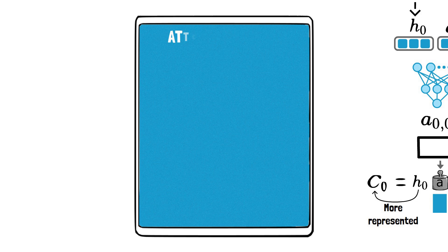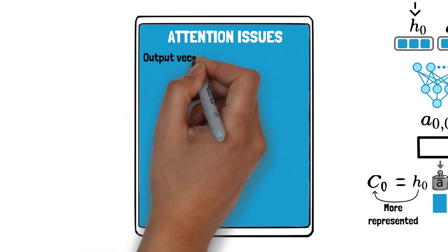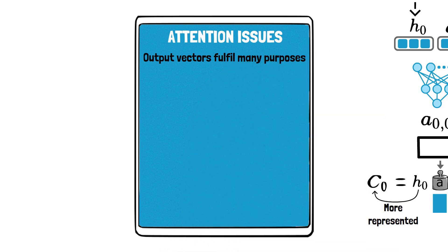Let's now explore more sophisticated and general forms of attention that have gained prominence in all of today's state-of-the-art language models. One issue with the attention mechanism described so far is that it uses the output vectors to fulfill several purposes all at the same time.